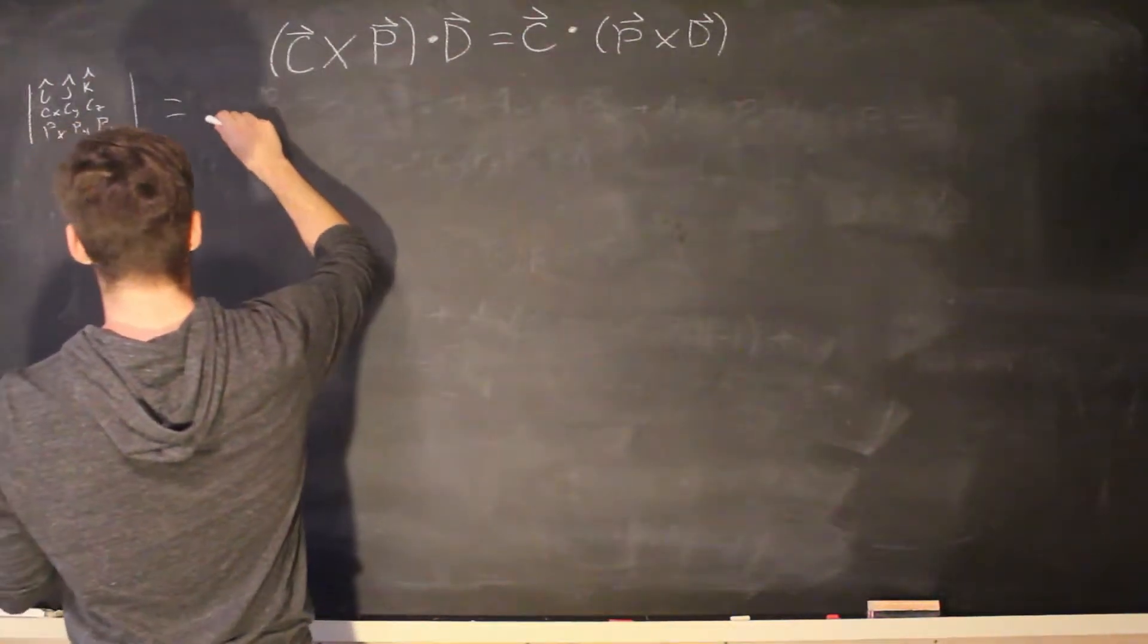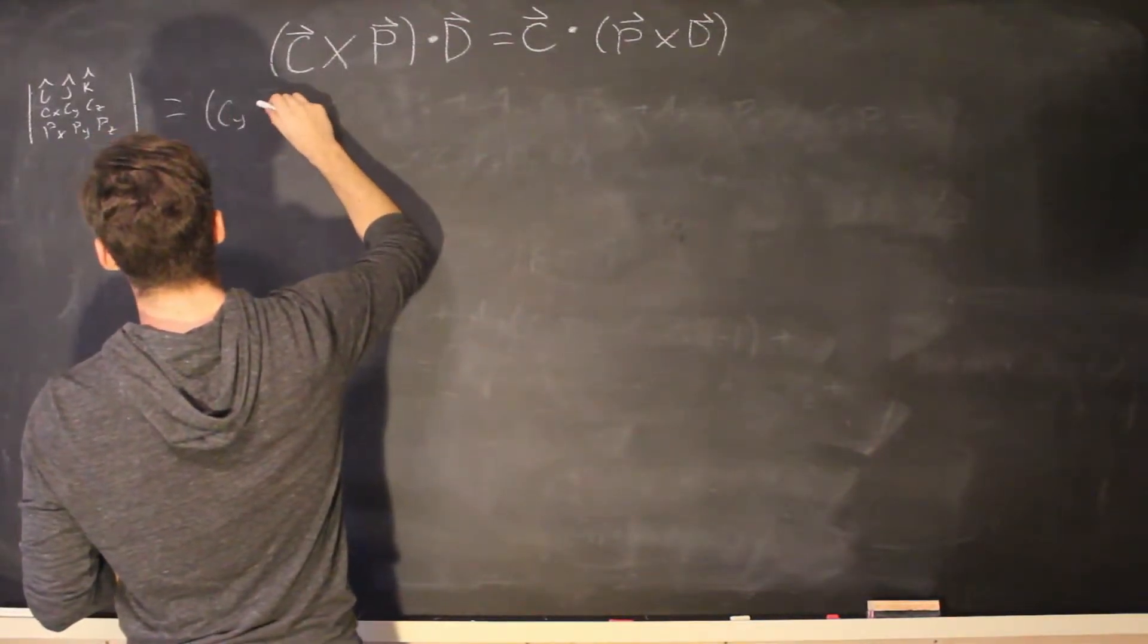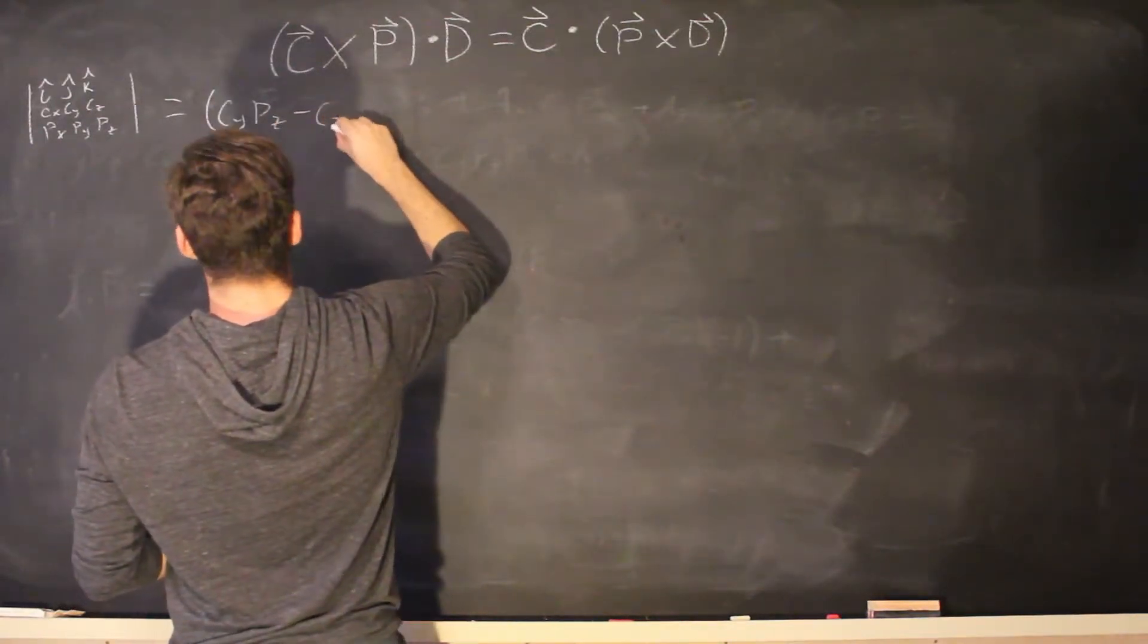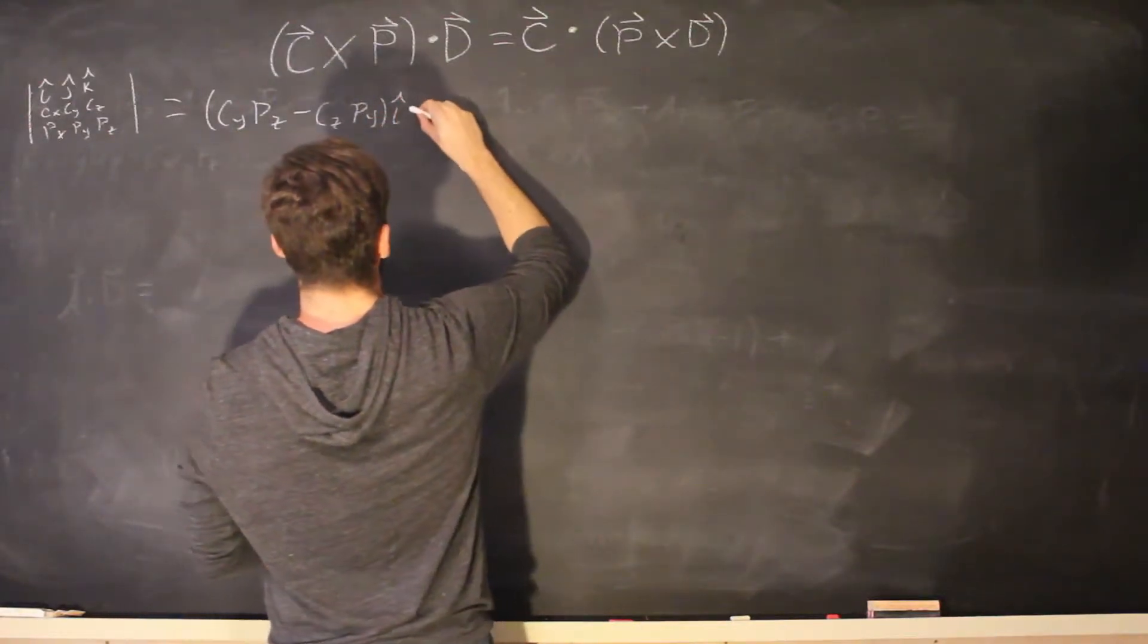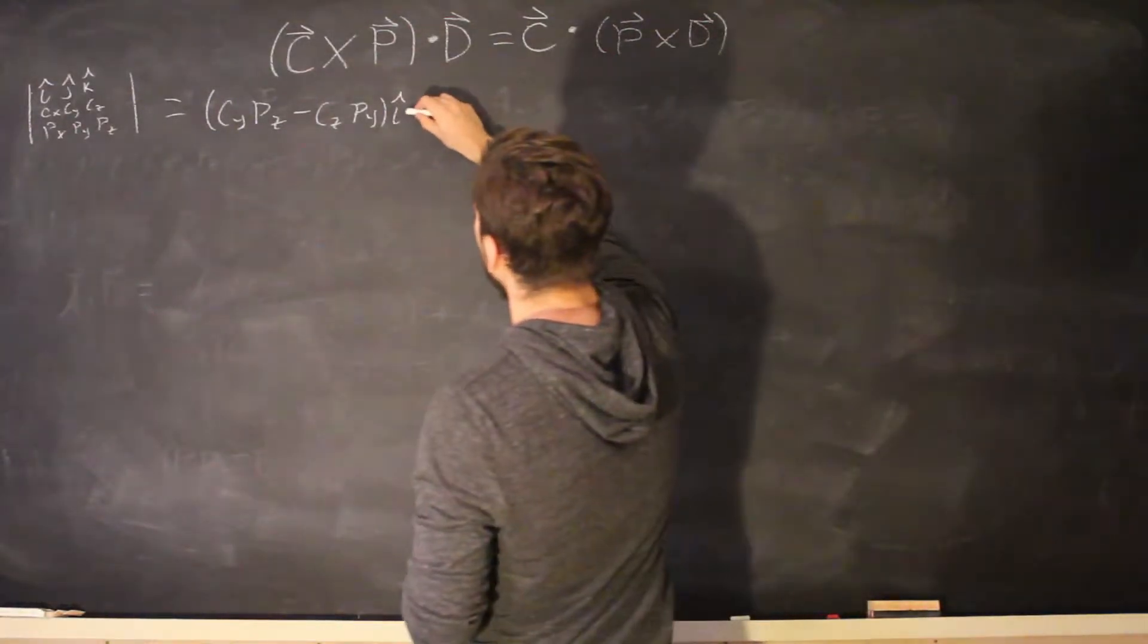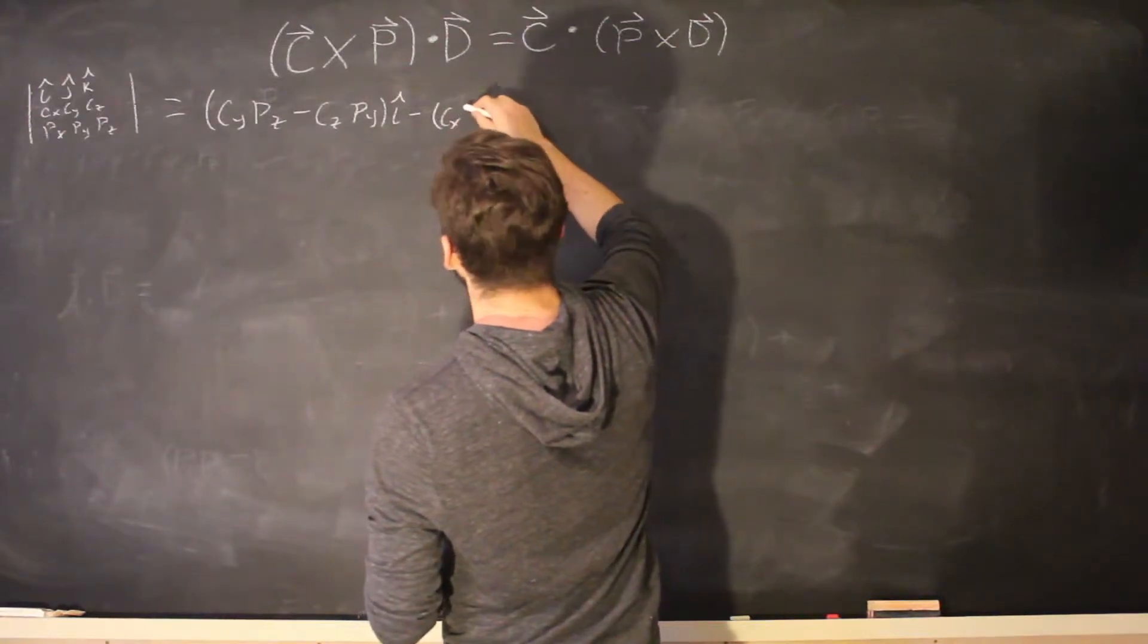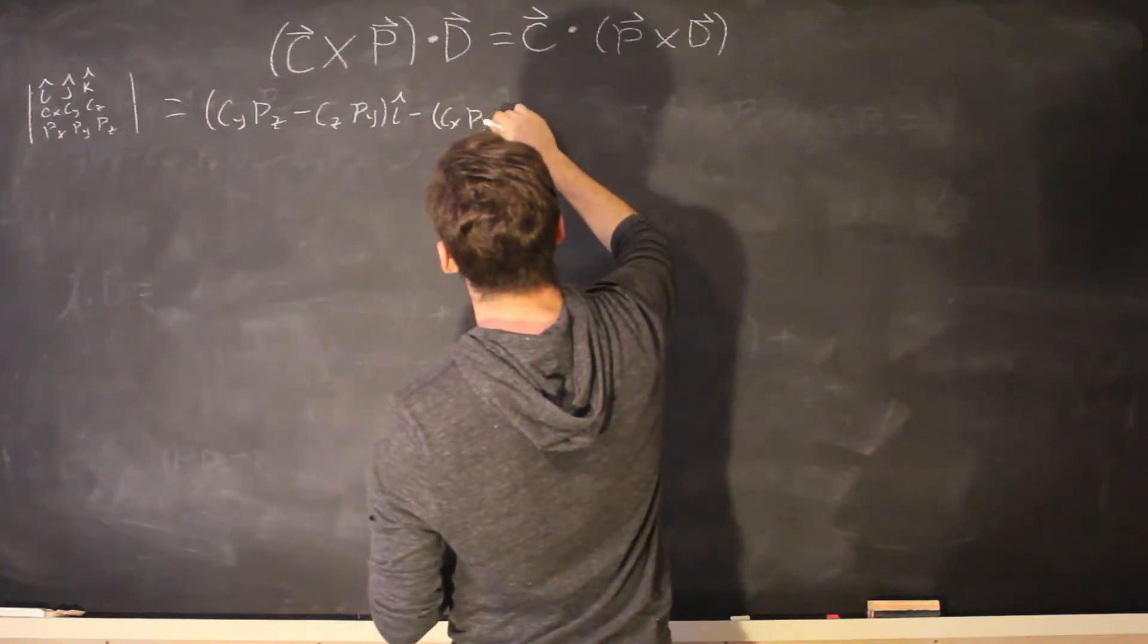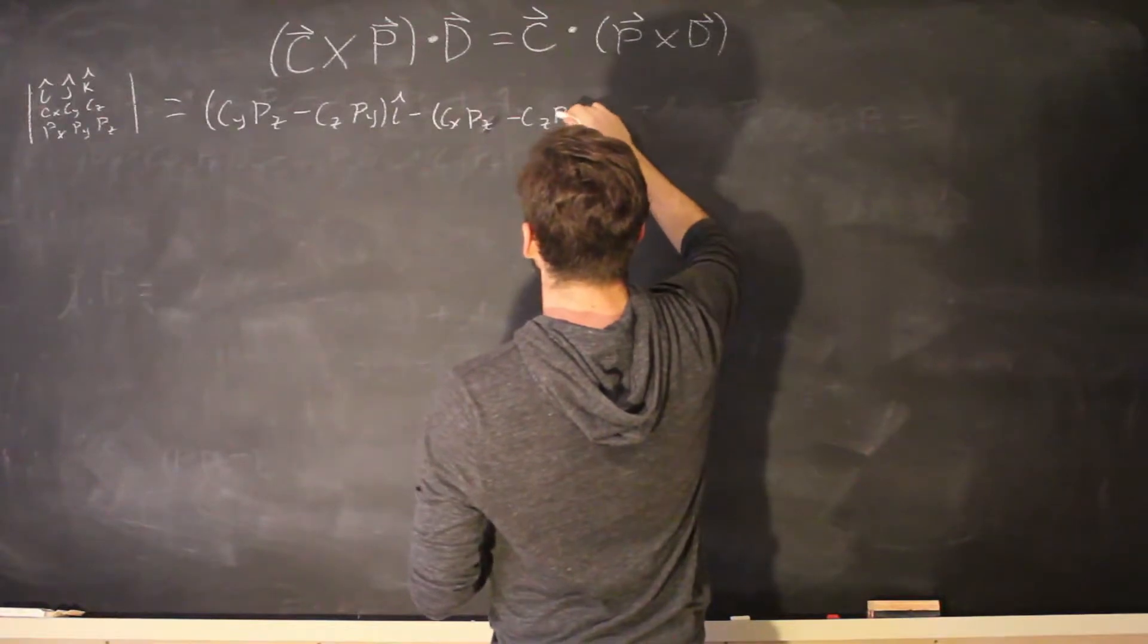So for the I term we're going to have C y, P z minus C z, P y, I hat, and I'm just going to distribute the negative from the J right now. minus C x, P z minus C z,